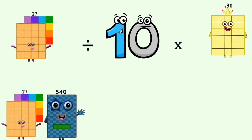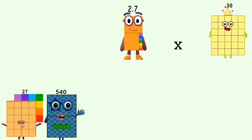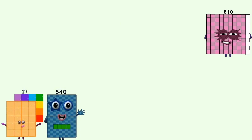27 divided by 10 equals 2.7. 2.7 times 30 equals 810.